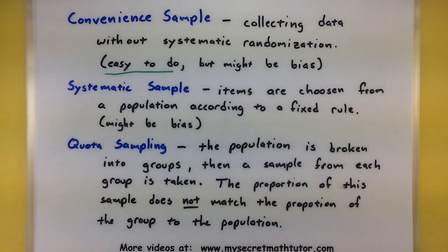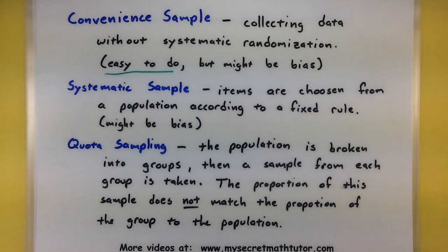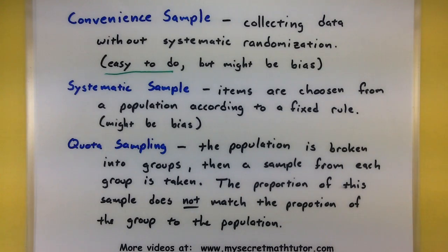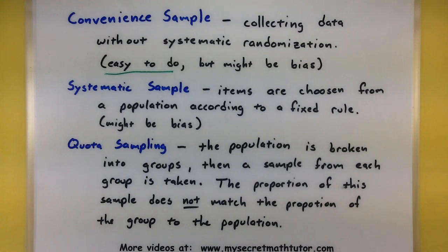The next one is a systematic sample. Items are chosen from a population according to a fixed rule. This one might be biased, but it's a little bit easier to do than a complete random sample. So say you're trying to survey students in the entire school — you get an entire list of students, and maybe you pick every tenth one off the list. That's a systematic sample.